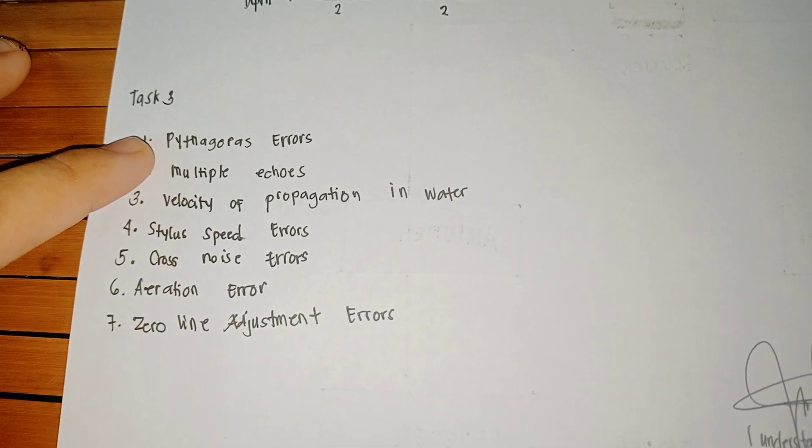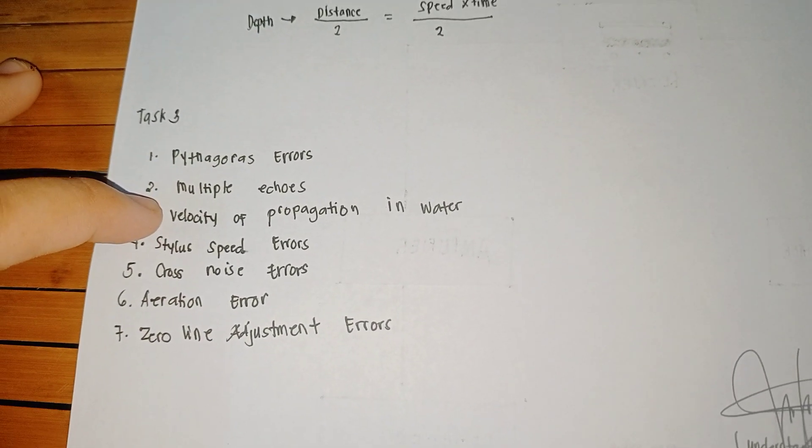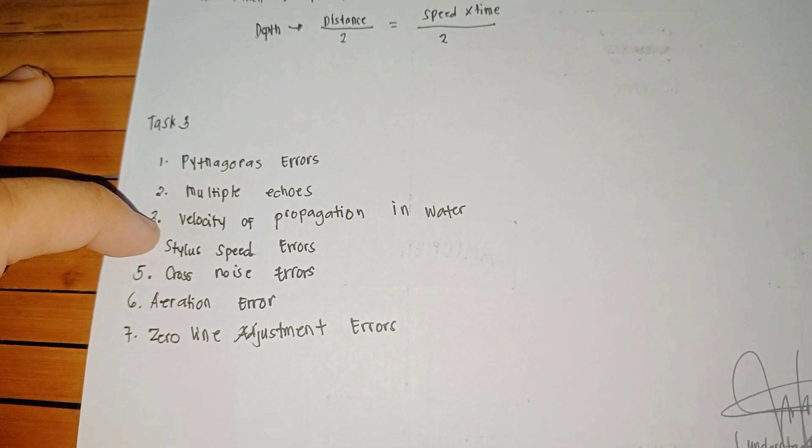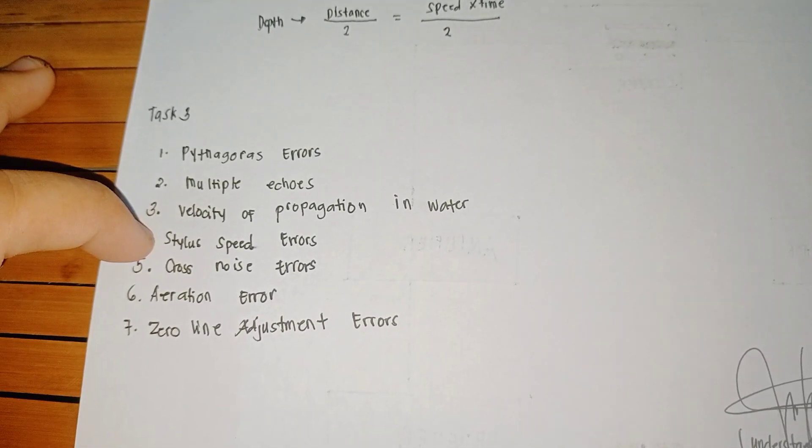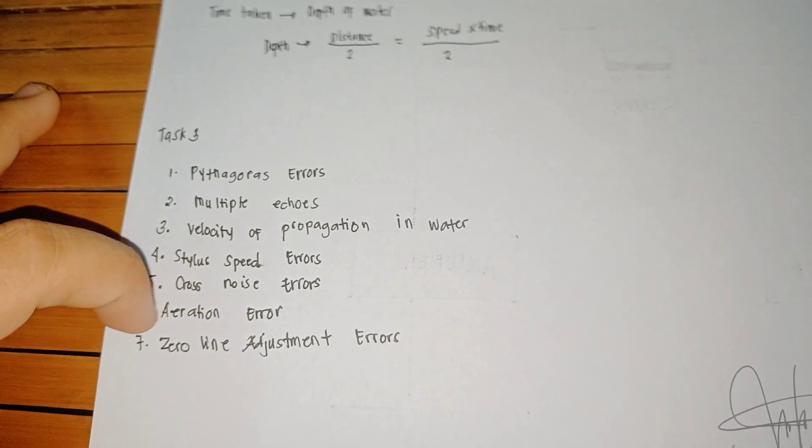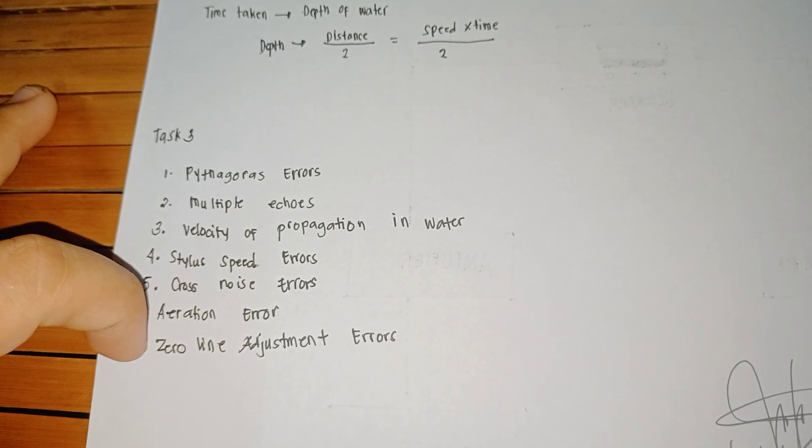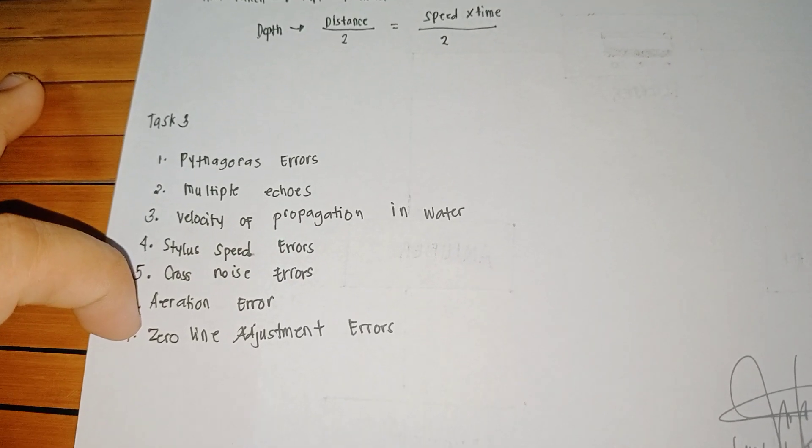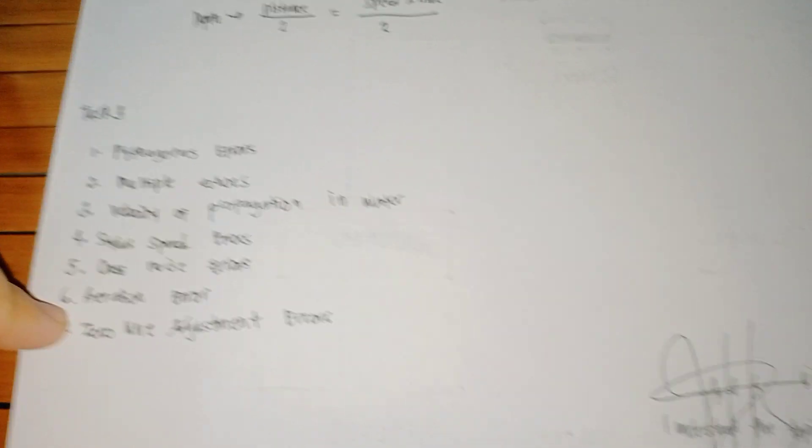These are: Pythagoras error, Multiple Echos, Velocity of Propagation in Water, Stylus Speed Error, Cross Noise Error, Aeration Error, and Zero Line Adjustment Error.